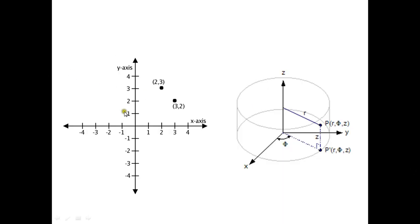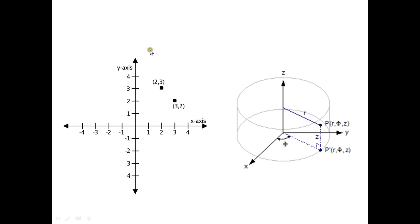This is the Cartesian coordinate system. Any point — for example, 2 and 3 — can be identified from this coordinate system. These are the wholly positive quadrant, these are the wholly negative, and there are positive-negative quadrants as well. This is the Cartesian coordinate system.